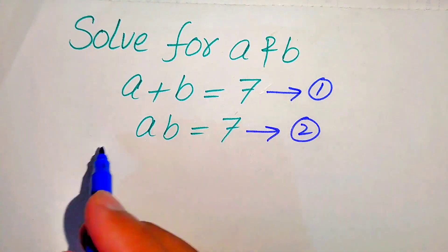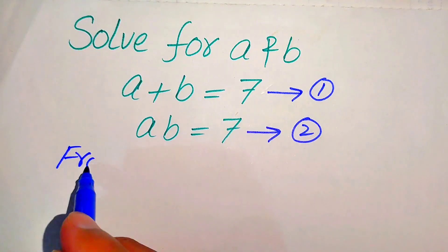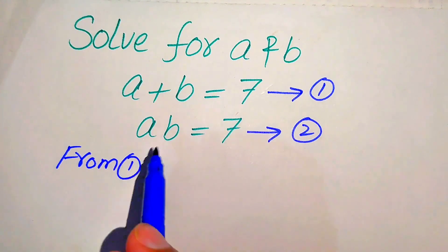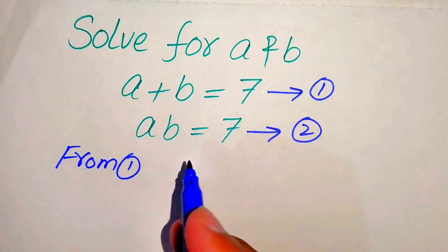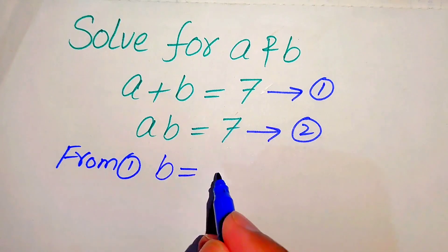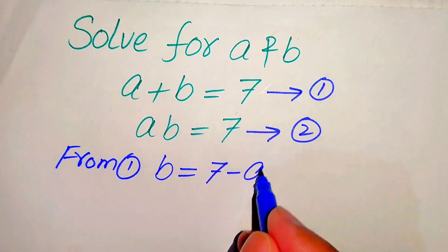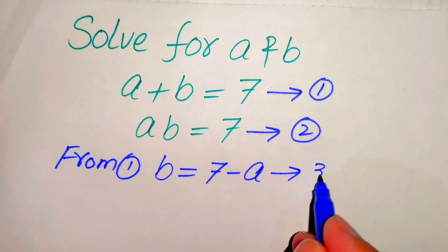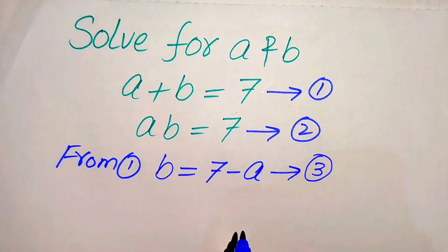First we focus on equation number 1. We move A to the right hand side and get the value of B equals 7 minus A, and we call this equation number 3.